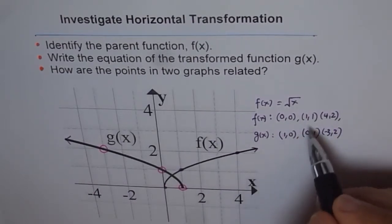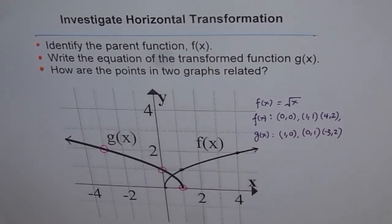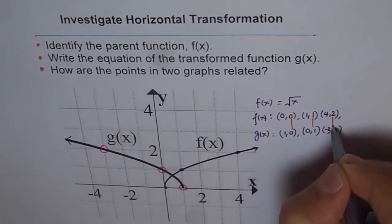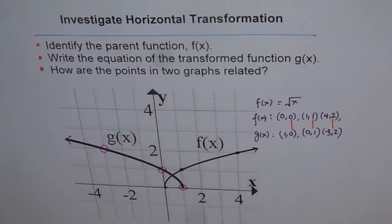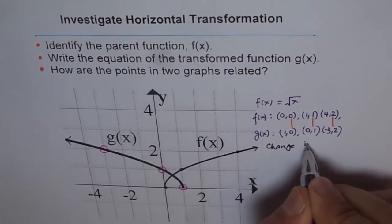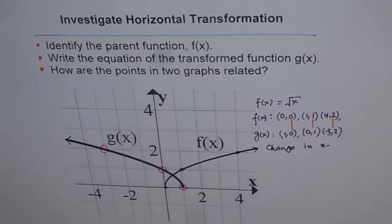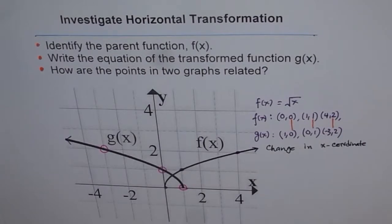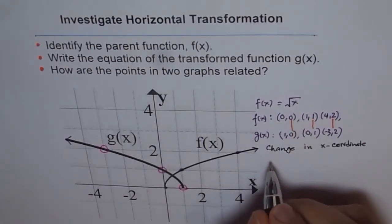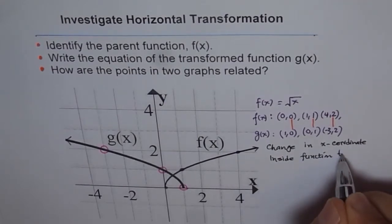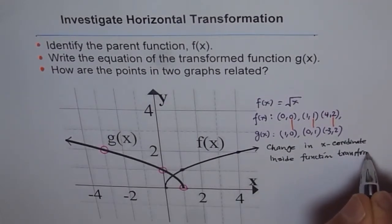Now, if you try to relate to these points, what do you notice? You notice that y points are same. Do you see that? The y points are same: 0, 0, 1, 1, and 2, 2. Only x points change. When only x points change, the note here is: change in x coordinates. So change in x coordinates. That is what you notice. That means something to do with inside function. That means inside function transformed.